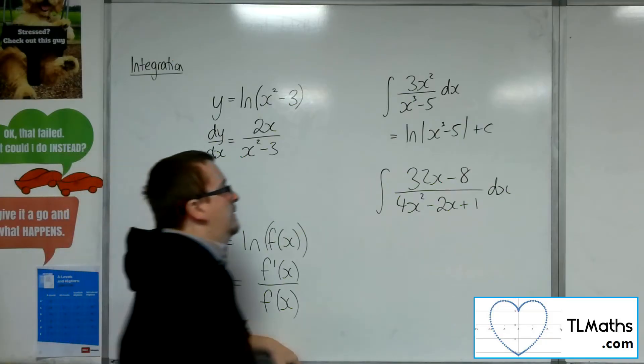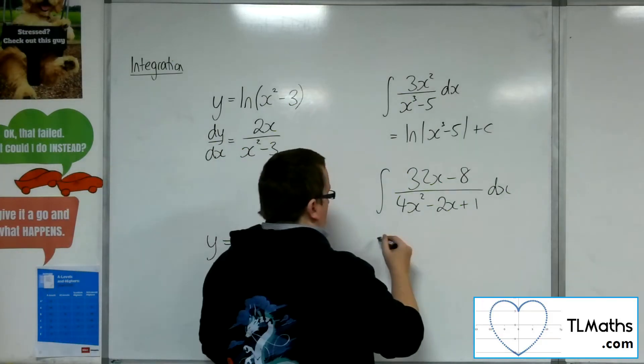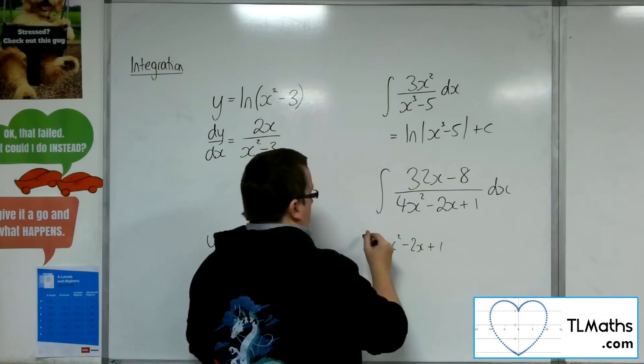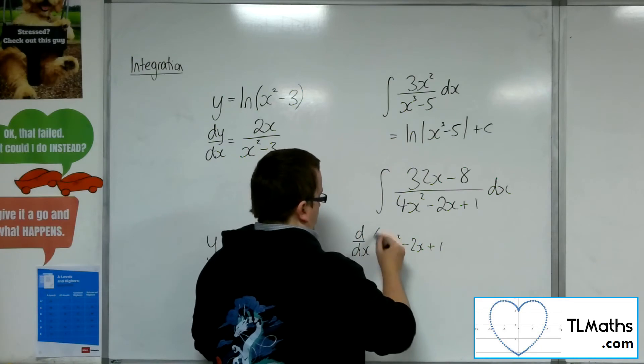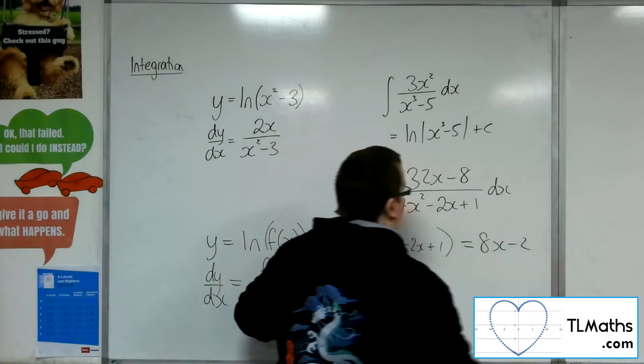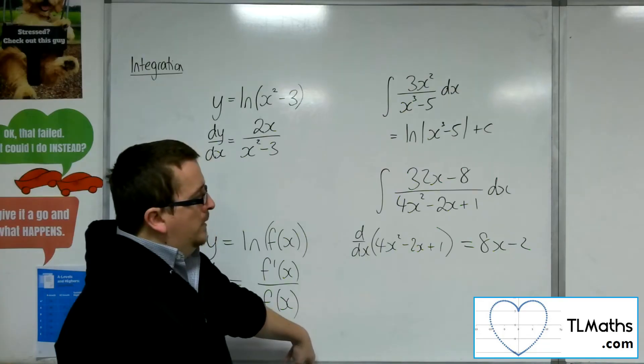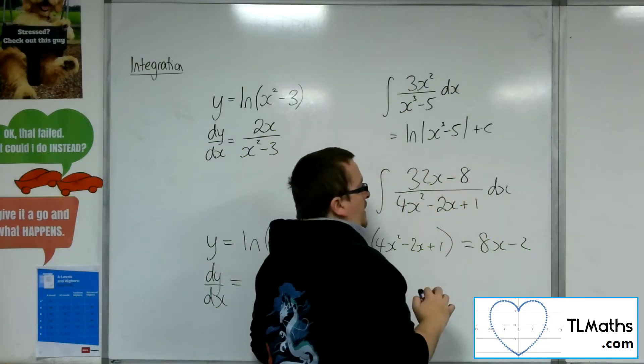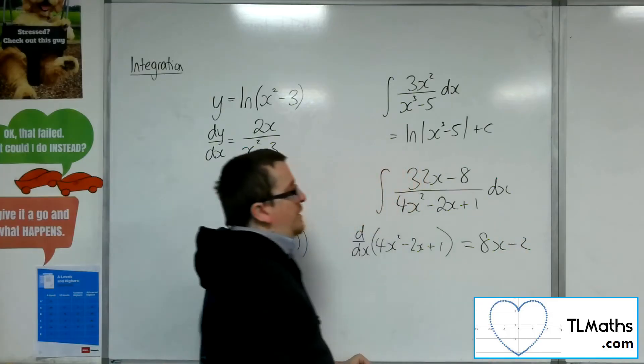So if I've got that, then what I need to look at is that 4x squared minus 2x plus 1. If I differentiate that, I get 8x minus 2. So is 32x minus 8 a multiple of 8x minus 2?